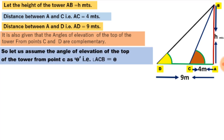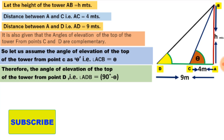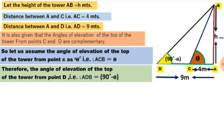Let us assume the angle of elevation from point C as theta, so angle ACB equals theta. Then the angle of elevation from point D will be 90 minus theta, since both angles are complementary and their sum is 90 degrees. In this figure we have two right triangles: triangle ABC and triangle ABD. Using these two right triangles, we will calculate the height of the tower.